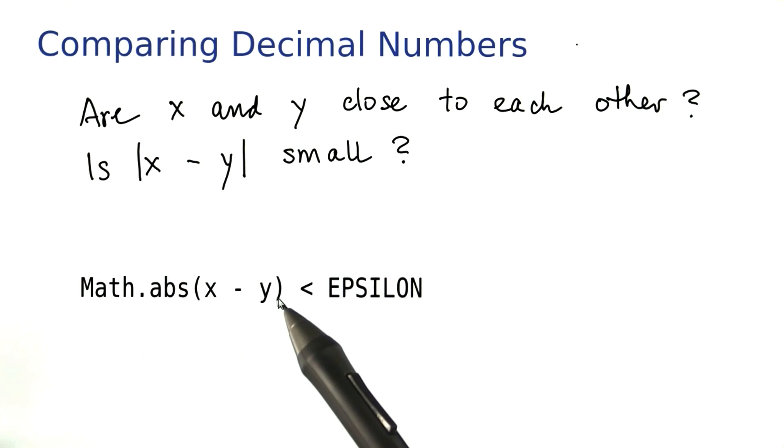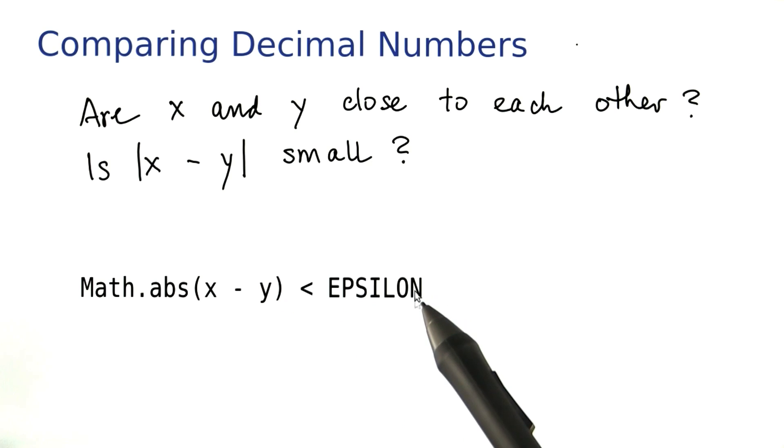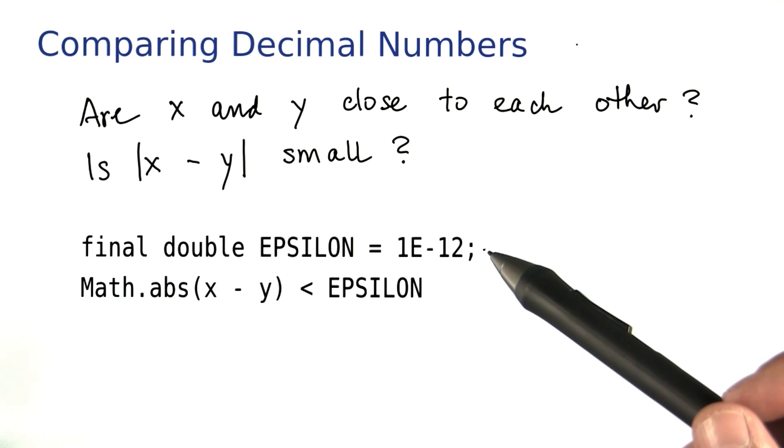Translated into Java, we compute the absolute value of the difference and we compare it against a tiny number. In math, one usually calls a tiny number by the name epsilon. And in many situations, 10 to the minus 12 is a pretty good value to use. Let's do that in our program.